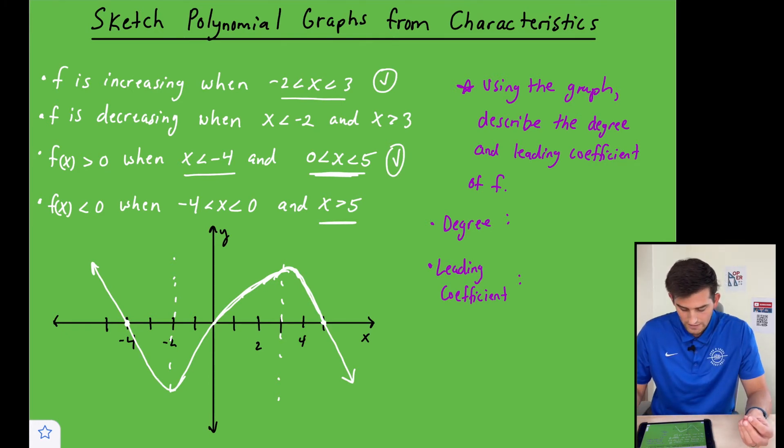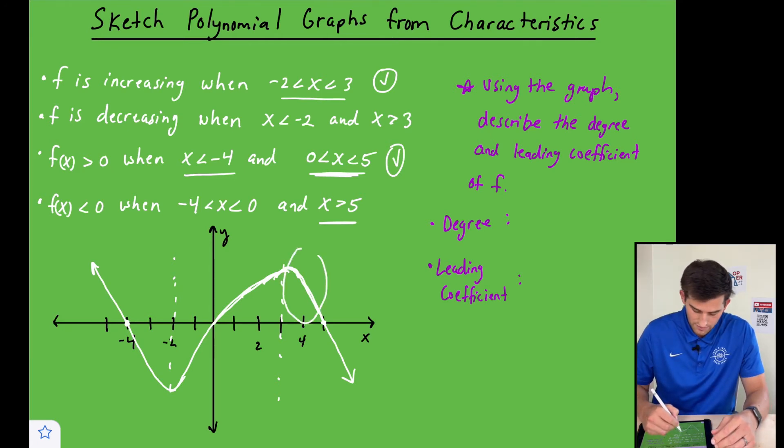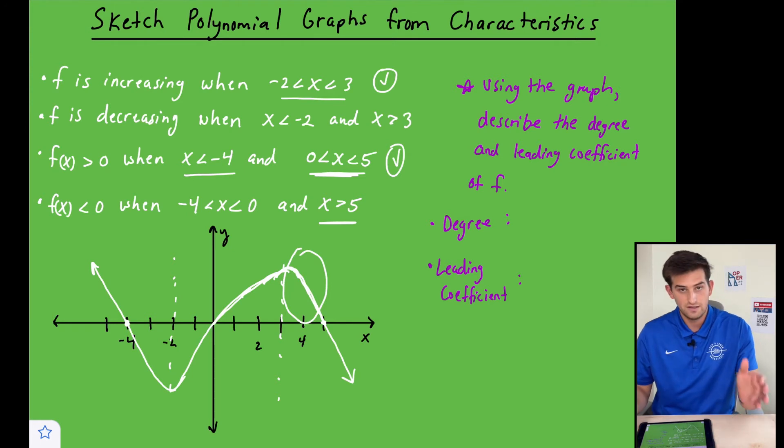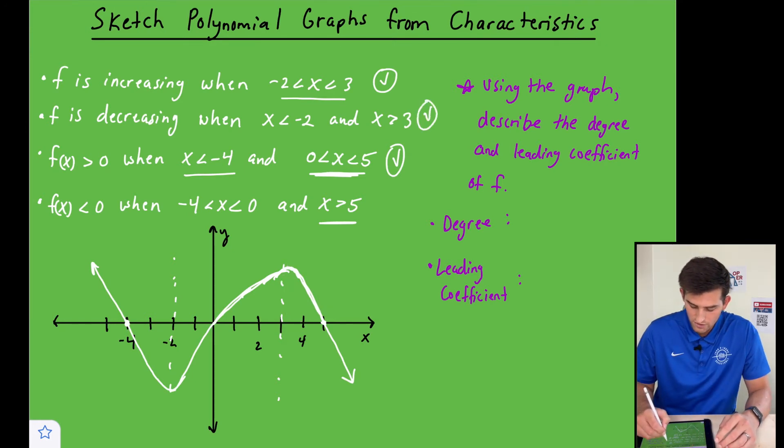And then when x is greater than three, we have a decreasing slope as well. And so we kind of already have established that with this piece right there going down. We're just checking to make sure we've satisfied all of these. So we're good there.